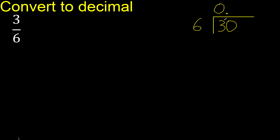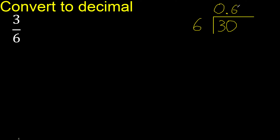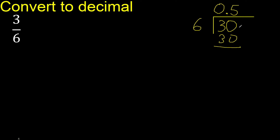We place the decimal point only once. Now 30 is not less than 6, so we work with 30. 6 multiplied by 6 is 36, which is greater — excessive — so we try another number: 6 multiplied by 5 is 30. 30 is not greater than 30, so that's ok.